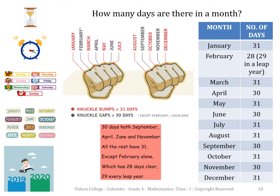Children, can you tell me how many days are there in a month? There are some methods to remember the number of days in a month. Can you see the picture of the hands and the way of marking the names of the months on the hands? It is one method to remember the number of days in a month. As shown in the picture, if the month falls on the knuckle bumps, there are 31 days. If the month falls on the knuckle gaps, there are 30 days, except February.